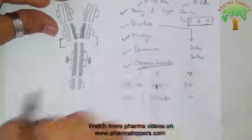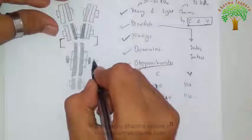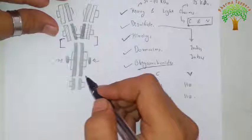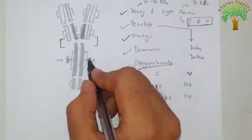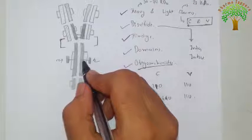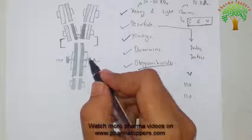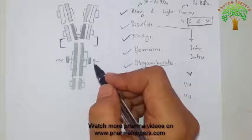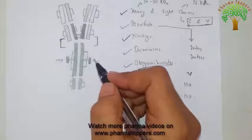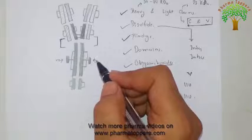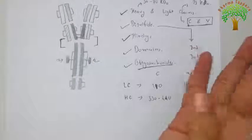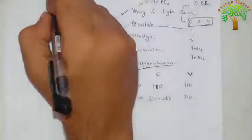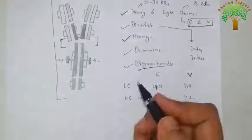Finally, the oligosaccharides. As you can see in the figure, oligosaccharides are attached with the heavy chains or light chains. Generally carbohydrates are attached to the CH2 domain in most immunoglobulins, though they may be found elsewhere also. This covers the basic structure of immunoglobulin and its components.